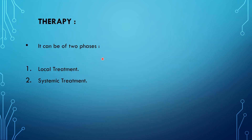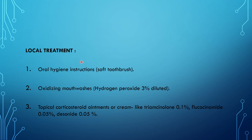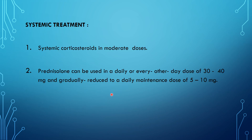Treatment can be of two phases: local treatment and systemic treatment. Local treatment includes oral hygiene instructions with a soft toothbrush, oxidizing mouthwashes such as hydrogen peroxide 3% diluted, and topical corticosteroid ointments or creams like triamcinolone 0.1%, fluocinonide 0.05%, or desoximetasone 0.05%. If not subsiding with local treatment — especially in moderate and severe cases — systemic corticosteroids are needed. Prednisolone can be used in a daily or alternate-day dose of 30 to 40 mg, gradually reduced to a daily maintenance dose of 5 to 10 mg.